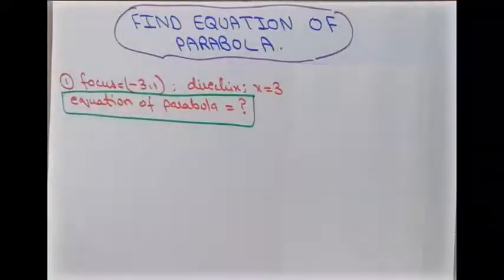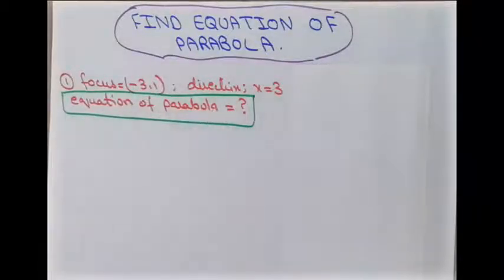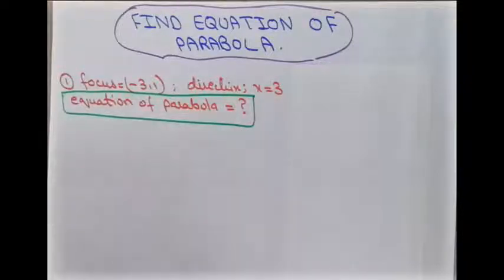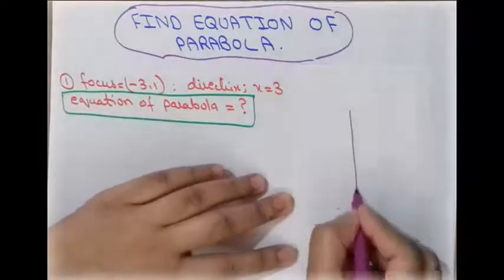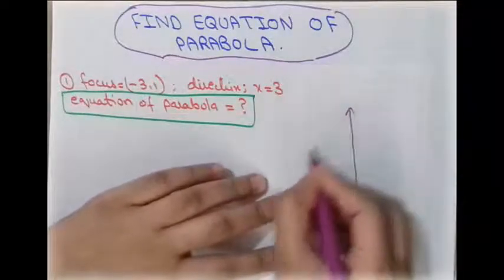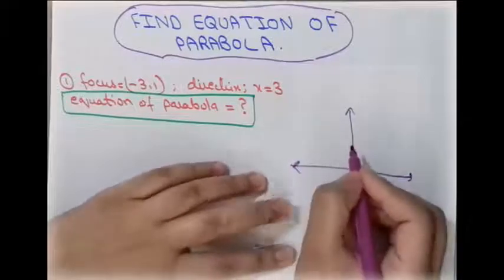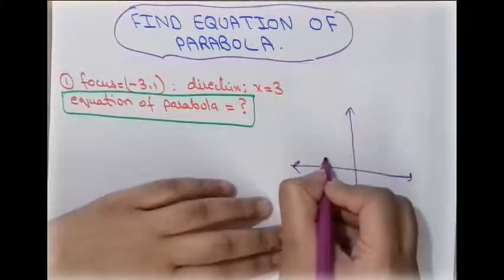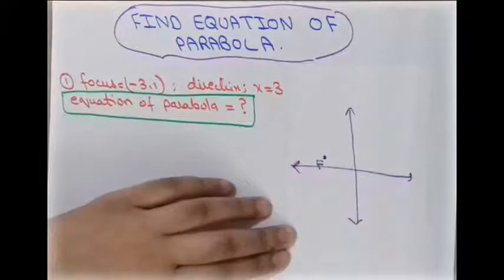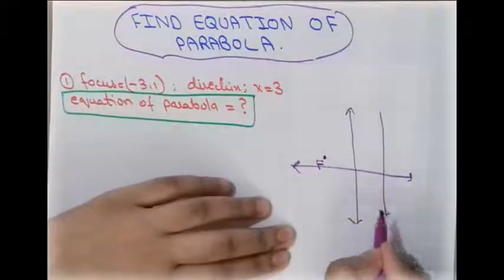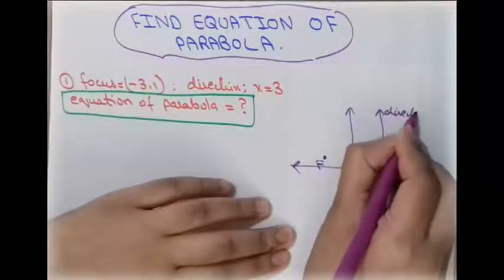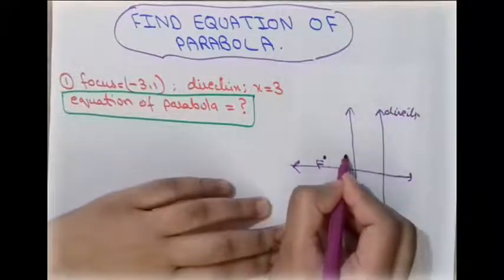In this lecture we will learn how to find the equation of a parabola when a focus and the directrix line is given. Before finding the equation of a parabola, we take a short review of the definition: a parabola is a set of all points which are equidistant from a fixed point called the focus and a fixed line called the directrix.